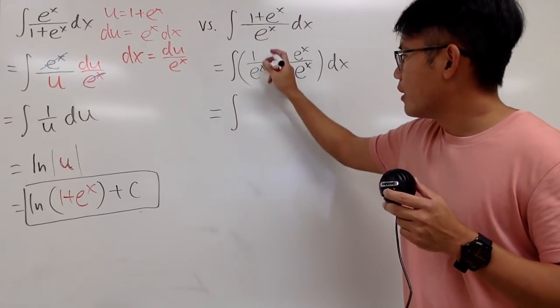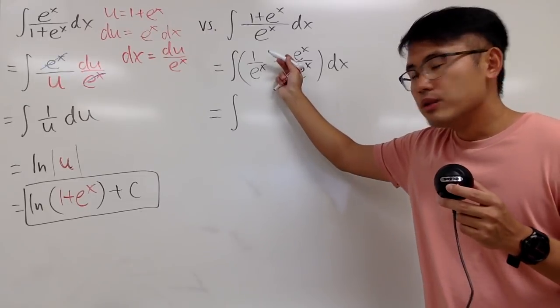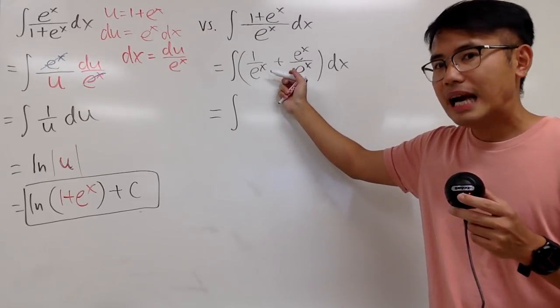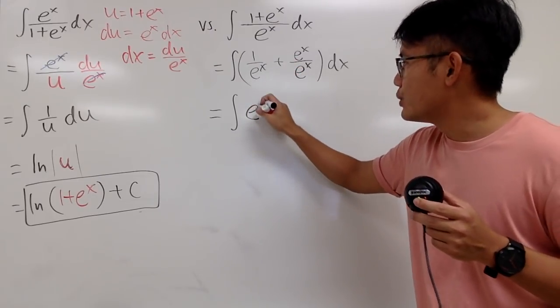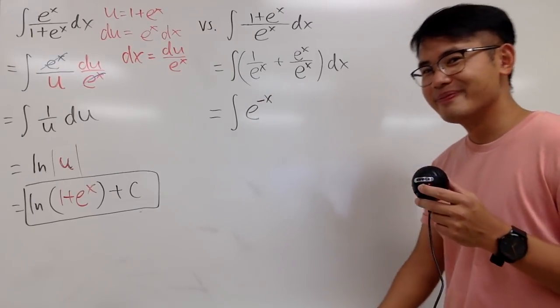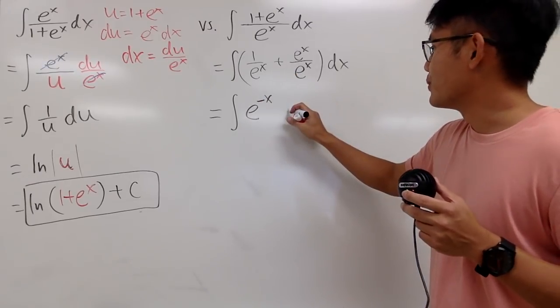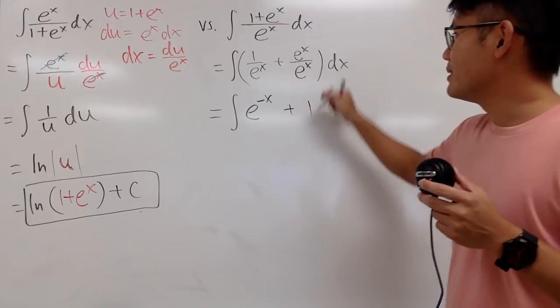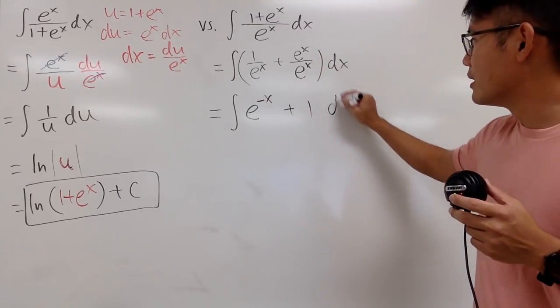And now you are going to see the following. This is the integral of, to integrate 1 over e^x, I will look at this as e^(-x). And then, of course, we have to do the plus 1, right? E^x over e^x is just 1, dx.